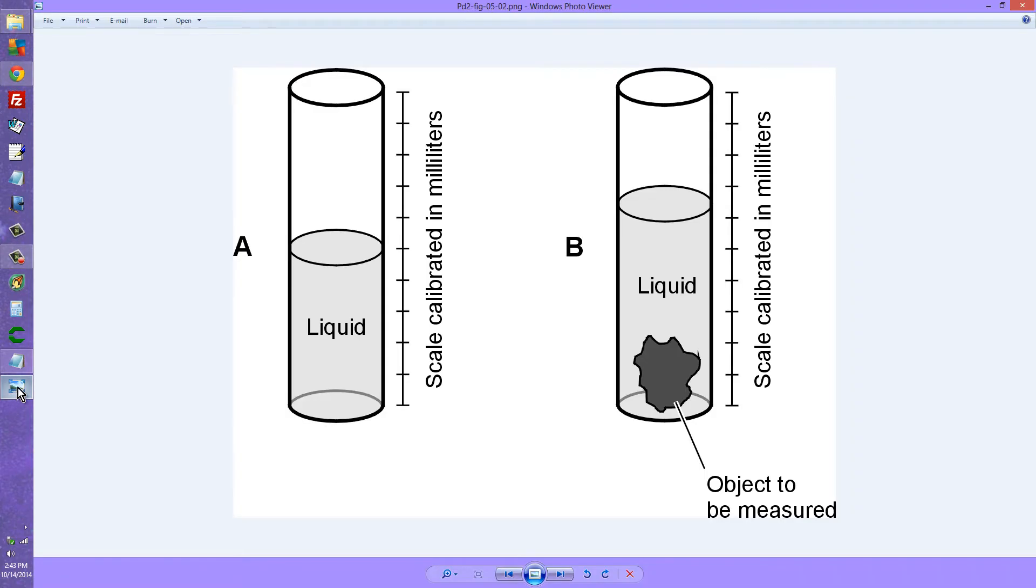But for now, what I'd like to do is show you a very simple way to determine the volume of an irregular object. For example, a nugget of, say, iron ore or a rock, a very irregular piece of stuff, and there's no way for you to measure its dimensions very well and get a precise idea of its volume.